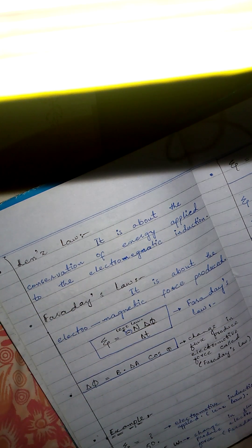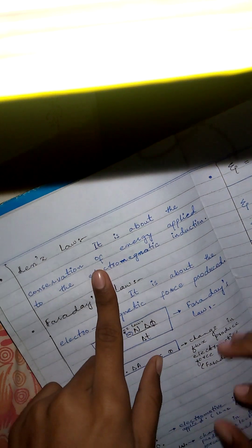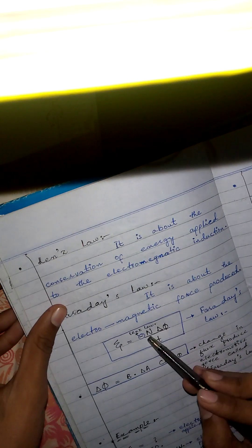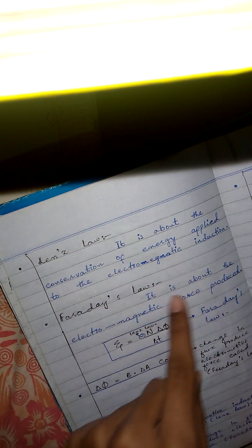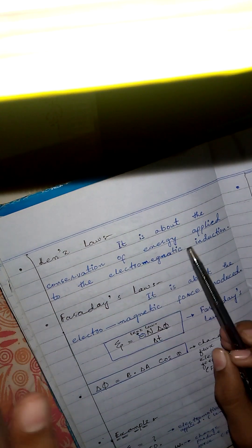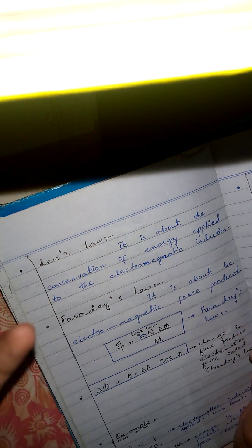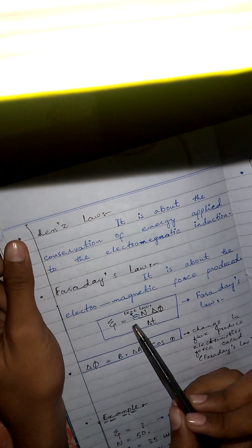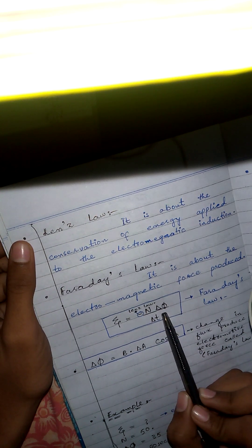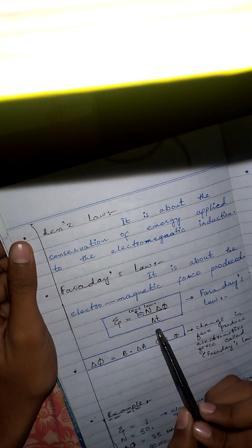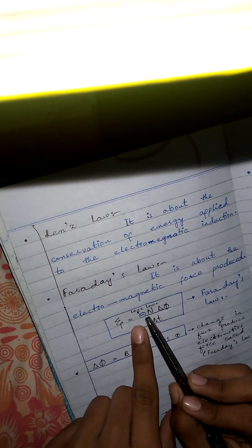So the definition is: Faraday's law is about how much electromagnetic force is produced from the change in flux. Regarding Lenz's law, the minus sign tells us about Lenz's law. Lenz's law is about the conservation of energy applied to electromagnetic induction. The formula is: EMF = −N × (ΔΦ/Δt).